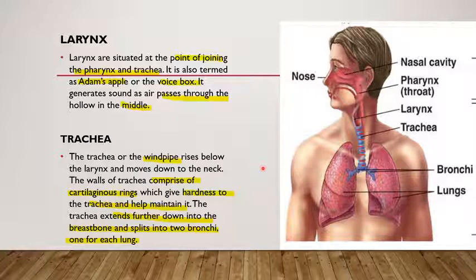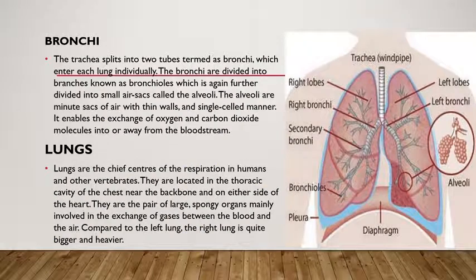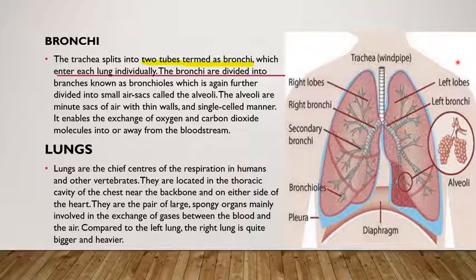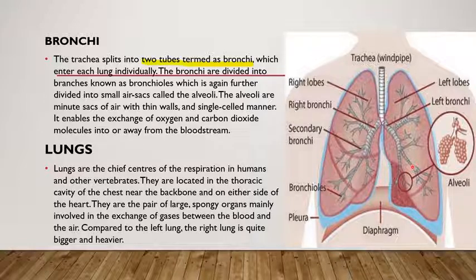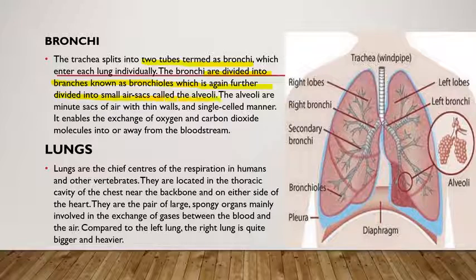The trachea splits into two tubes called bronchi. The right bronchus and left bronchus enter individually into each lung. The bronchi are then divided into branches known as bronchioles, which are further divided into small air sacs called alveoli.